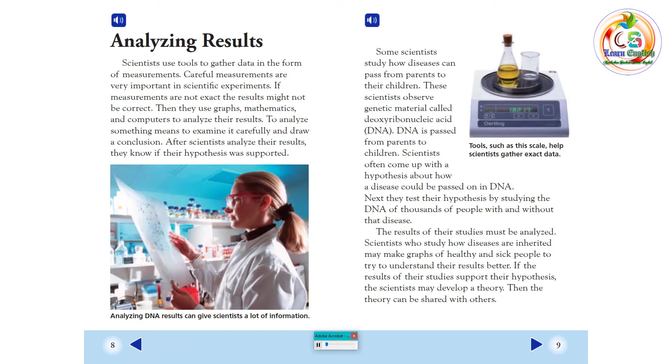Analyzing Results. Scientists use tools to gather data in the form of measurements. Careful measurements are very important in scientific experiments. If measurements are not exact, the results might not be correct. Then, they use graphs, mathematics, and computers to analyze their results. To analyze something means to examine it carefully and draw a conclusion. After scientists analyze their results, they know if their hypothesis was supported.